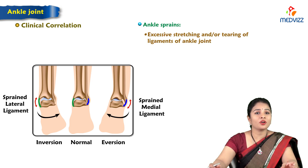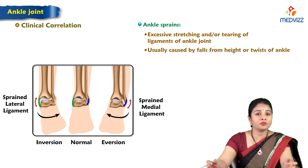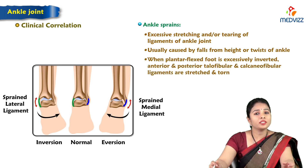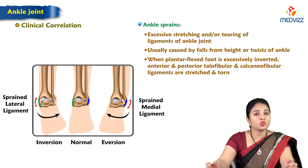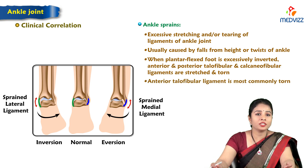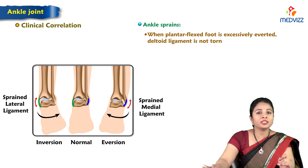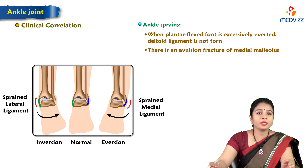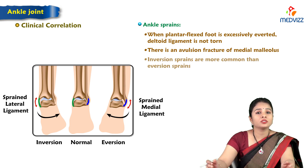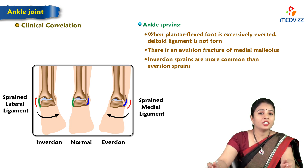Ankle sprains involve excessive stretching or tearing of the ankle ligaments, usually caused by falls from height or twisting. When the plantar-flexed foot is excessively inverted, the anterior talofibular, posterior talofibular, and calcaneofibular ligaments are stretched or torn — the anterior talofibular ligament is most commonly torn. Inversion sprains are more common than eversion sprains because the deltoid ligament is stronger than the lateral ligament.